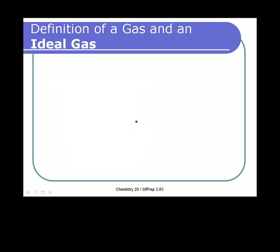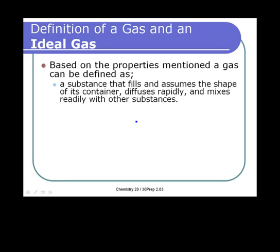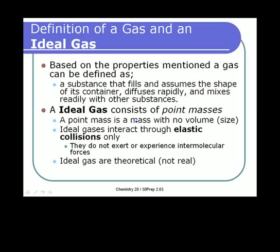When we're talking about gases, we're going to start with the idea of an ideal gas. This isn't a real gas, but it's a gas that has all of the properties that gases should. An ideal gas is a substance that fills and assumes the shape of its container, diffuses rapidly, and mixes readily with other substances. Ideal gases are considered to be point masses — they have mass but no volume — which isn't true of any gas that actually exists. But because molecules are so small, we assume that in the gaseous state they have no actual size that matters. They only interact through elastic collisions, and when they do hit each other, they don't exert or experience intermolecular forces. These gases are theoretical, but most gases really do approach the idea of an ideal gas.